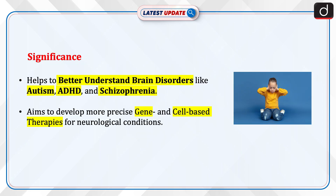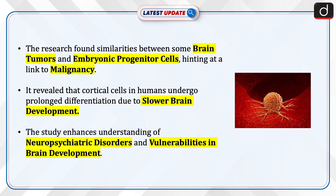The significance of this research is as follows: it helps to better understand brain disorders like autism, ADHD, and schizophrenia. It aims to develop more precise gene and cell-based therapies for neurological conditions. The research found similarities between some brain tumors and embryonic progenitor cells, hinting at a link to malignancy. It also revealed that cortical cells in humans undergo prolonged differentiation due to slower brain development, enhancing understanding of neuropsychiatric disorders and vulnerabilities in brain development.